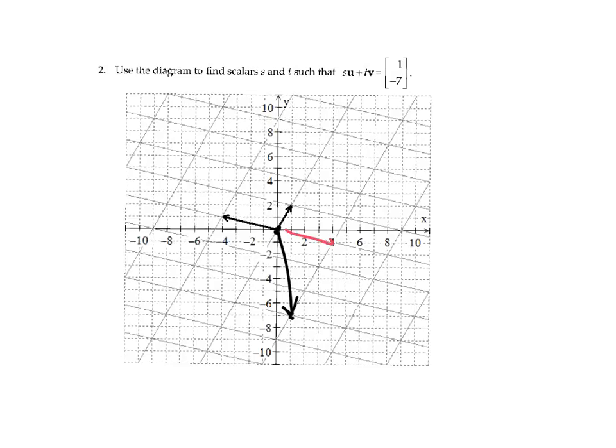So we could either take this path from here to here, which this vector would be negative v, because it points along the same line as v but in the opposite direction. And then from the ending of negative v, it'll go this way along this parallel line. This is the vector u. So we're going in the opposite direction, 3 units. So this is negative 3u.